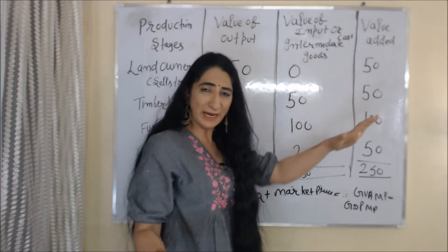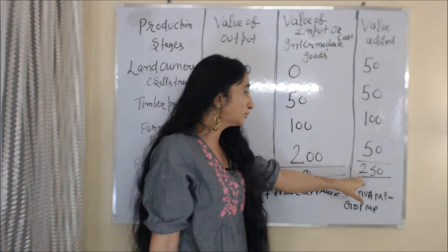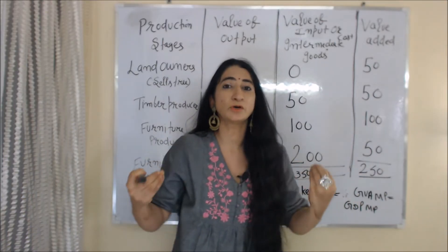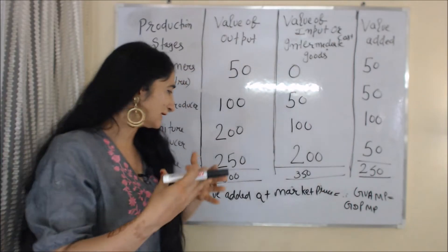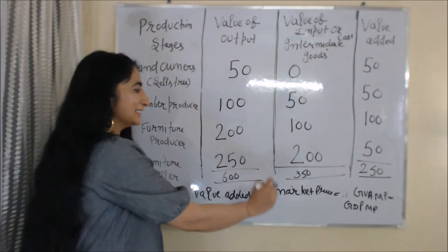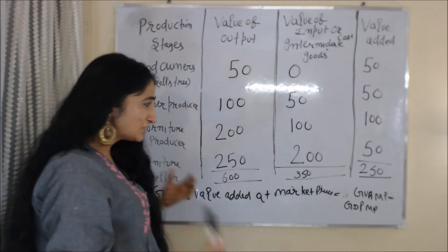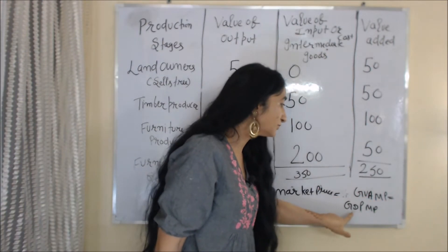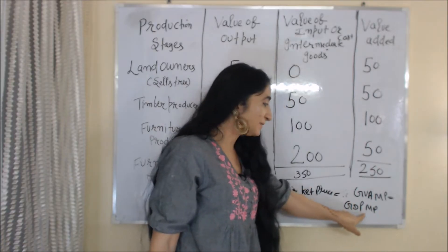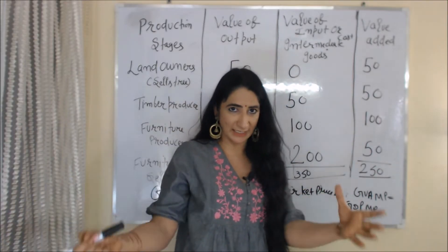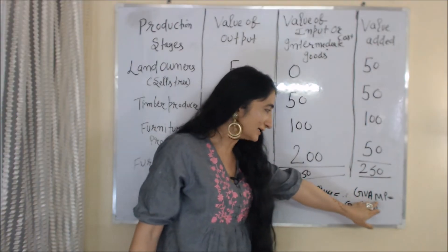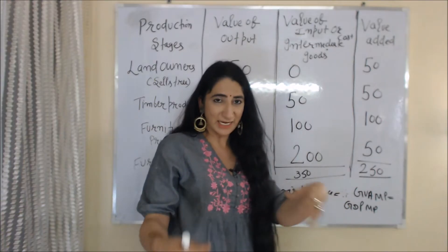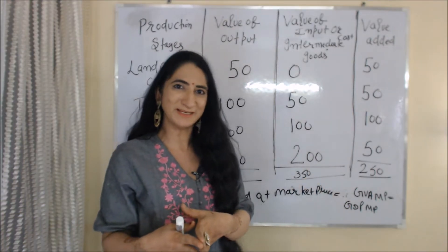The total of value added by each producing unit equals 250. This 250 is the sum total of value added by each producing unit, which we call Gross Value Added at Market Price, or GVAMP. This GVAMP is equal to GDPMP — Gross Domestic Product at Market Price. I have a separate video on GDP; please check it.